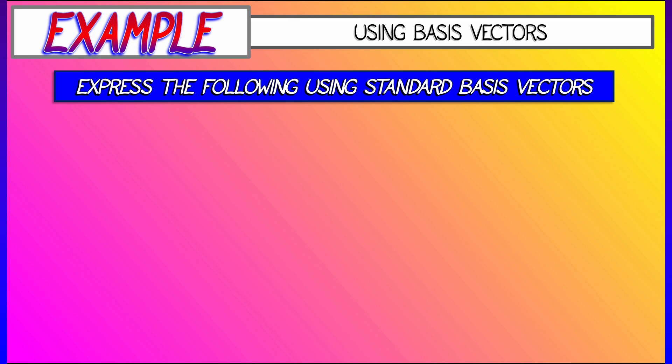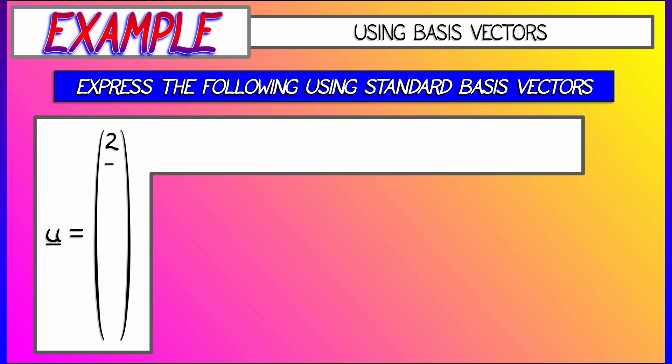So let's start. Let's take the following vector and express it in terms of the standard basis vectors. Let's say that u is 2, negative 1, 0, 5, 1, negative 3, 9, 0, 4. Wow, what is that? That's in r9.